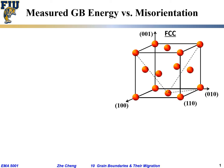Here we are going to show the grain boundary energy versus misorientation using the example of FCC — face-centered cubic. I'm illustrating a unit cell for an FCC structure. Of course we have the atoms at the eight corners and at each of the face centers, giving us the so-called FCC or face-centered cubic structure. From the origin we have different directions such as [100], [010], [001] — our x, y, and z directions — and from the origin to the face center is the [110] direction.